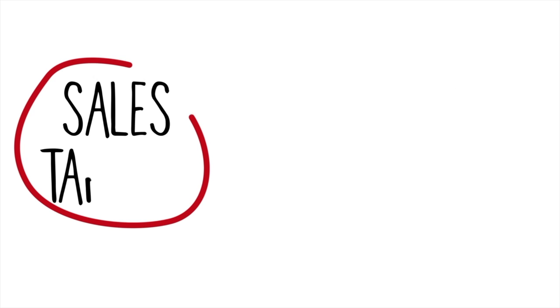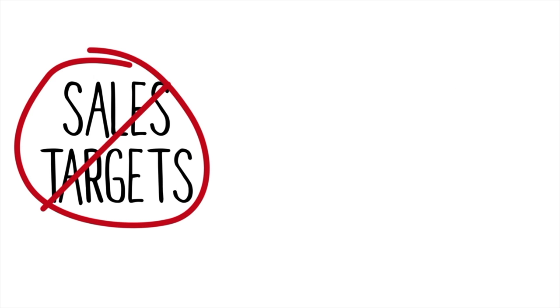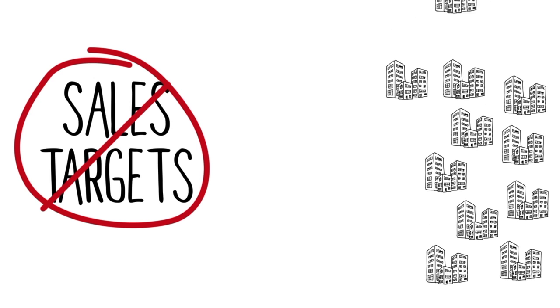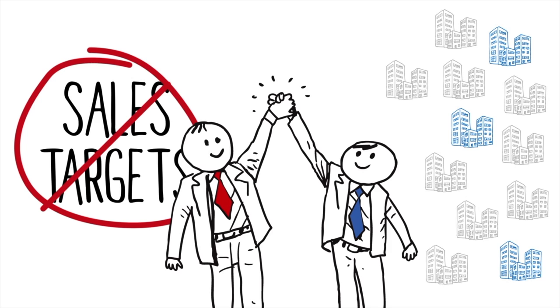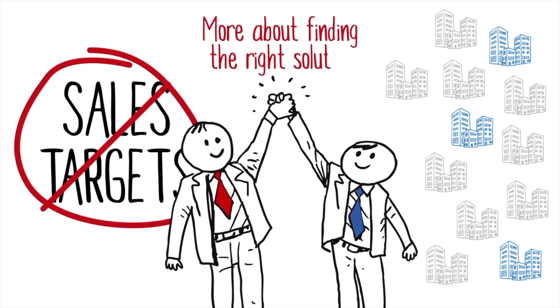The advisor doesn't have sales targets to hit with suppliers because of their affiliation with a technology services distributor. They can choose from dozens or even hundreds of suppliers, with no obligation or incentive to choose one. Meaning Bob gets the best solution for his company, not for the salesperson. In short, the advisor cares less about selling Bob something and more about helping Bob find the right solution.